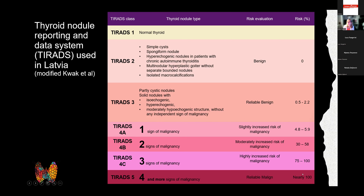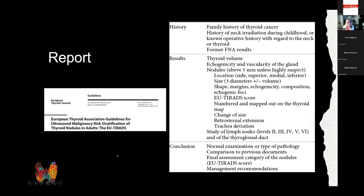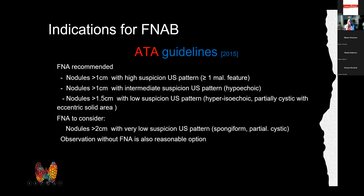The report should contain: volume, characterization of echogenicity, vascularity, all nodule locations, size, shape, TIRADS scores, changes from previous examinations, extent of changes, regional lymph node changes, and a conclusion with management recommendations — including whether biopsy is recommended.